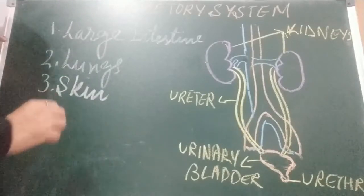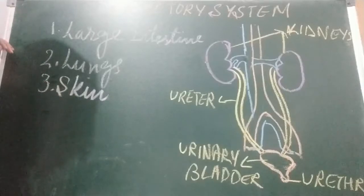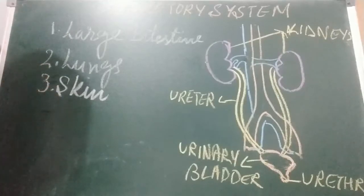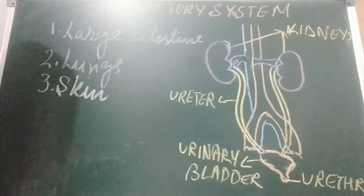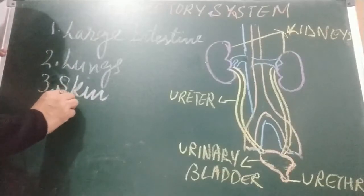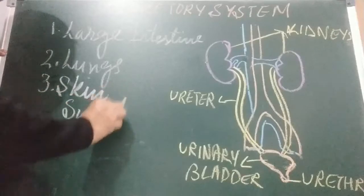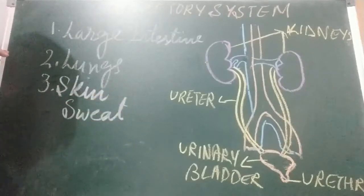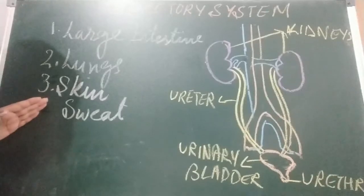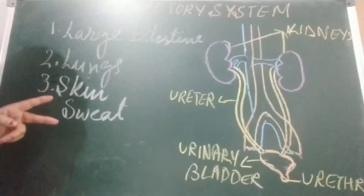Third is the skin. Our skin helps in eliminating excess water, urea, some salts, and other metabolic waste in the form of sweat. Sweat is a liquid waste secreted from the sweat glands below the skin. Sweat glands are present below the skin and they help in removing water, urea, some salts, and other mineral salts.